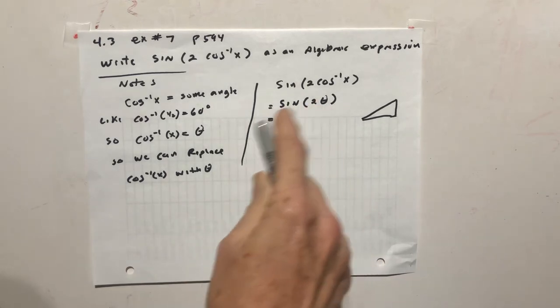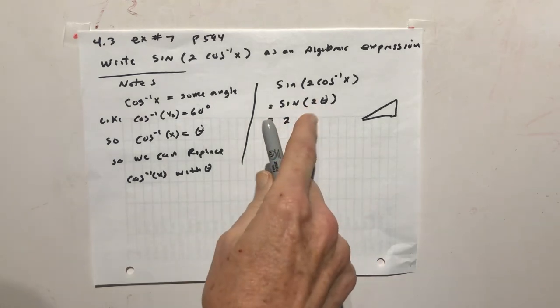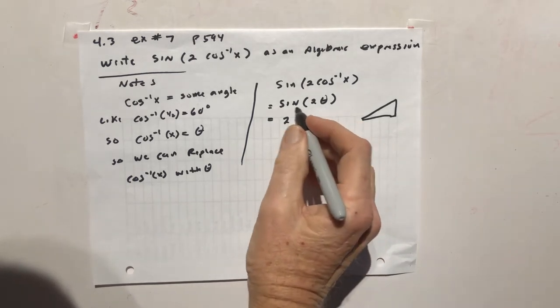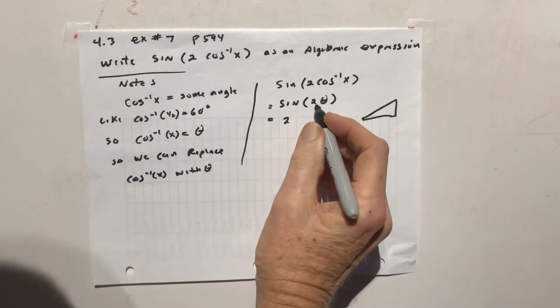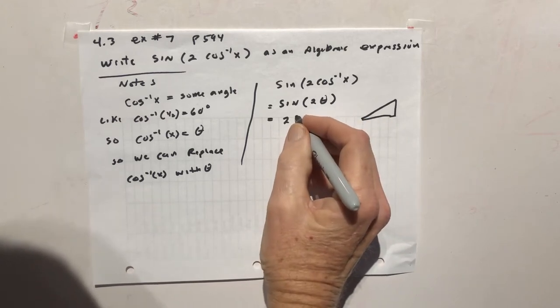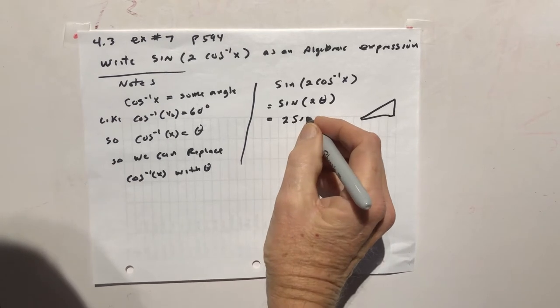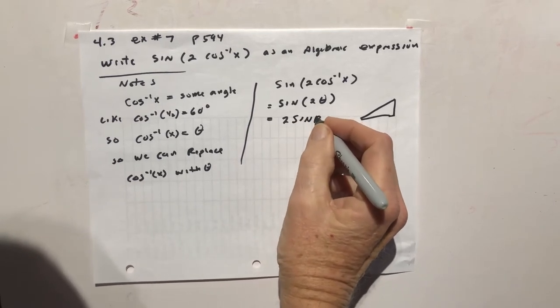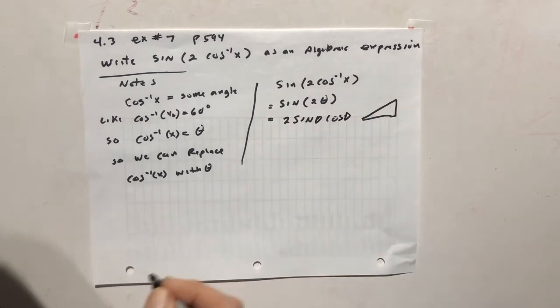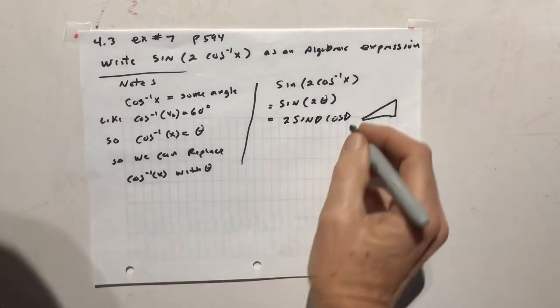And this should look familiar, because this is one that's used a lot. It's a double angle, and it's one of the easier ones to remember. Sine of 2x or 2 theta can be replaced with 2 sine theta cosine theta.